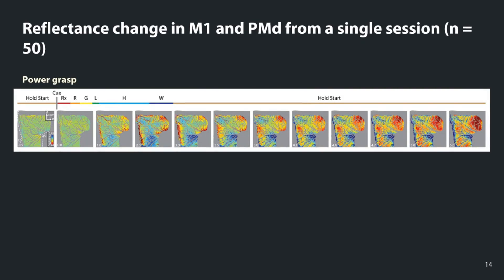Looking at results from a single session for the condition in which the monkey reached to grasp the large sphere — thus evoking a power grip — the behavior is shown above the frames in a colored timeline indicating different phases of the trial. The increase in red pixels, indicating increased neural activity, does not show up until later frames, starting around four seconds after the monkey received the go cue, or about 1.2 seconds after the monkey completed movement.